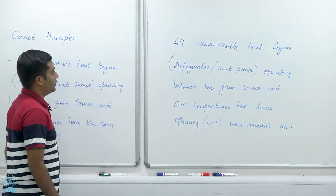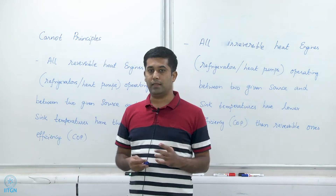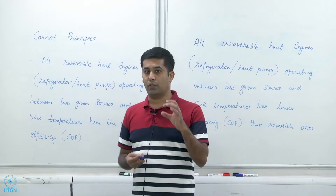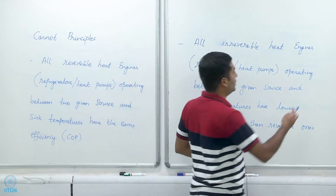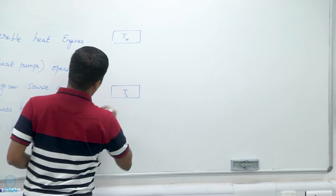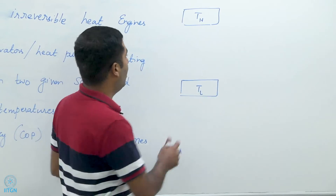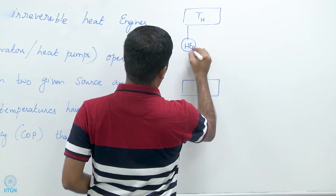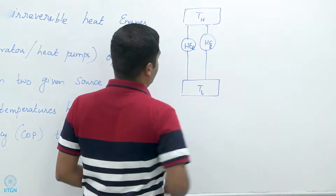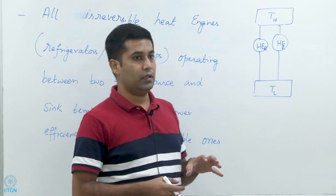The second Carnot principle says that all irreversible heat engines that operate between two given temperatures T_H and T_L have efficiencies that are lower than a reversible heat engine operating between the same two reservoirs. If I fix T_H and T_L at any values, then once fixed, all reversible heat engines have the same efficiency.